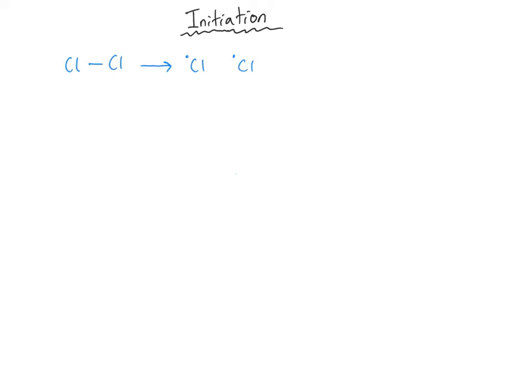The first step — the initiation step — is the breaking of the bond between the halogens in the diatomic halogen molecule. We can show the equation as Cl₂ turning into two chlorine free radicals using ultraviolet light. If asked to write the initiation step of a halogenoalkane synthesis using chlorine, that equation in the box is what you write.